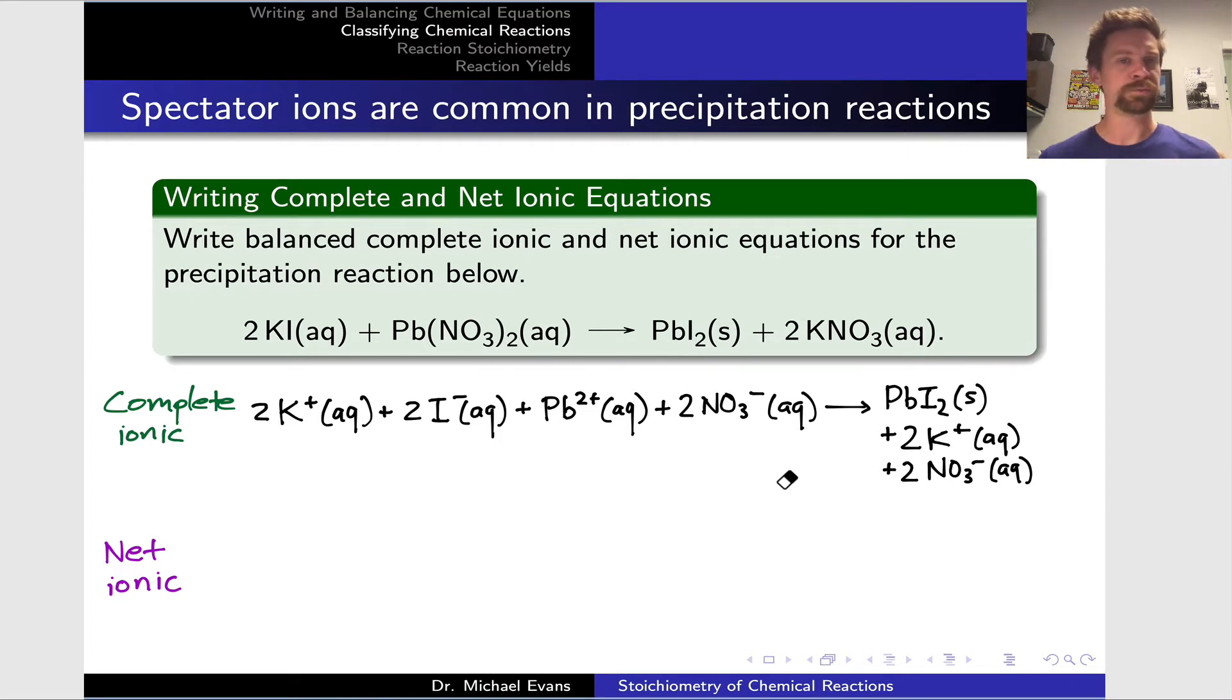We've got quite a few spectator ions here. We see, for example, K+, two of them on the left-hand side and 2K+ on the right-hand side, and 2 nitrates on the left-hand side and 2 nitrates on the right-hand side. Those are spectators that can be omitted to form the net ionic equation. The net ionic equation involves the combination of aqueous Pb2+, two aqueous iodides I-, to form PbI2 solid in this process.